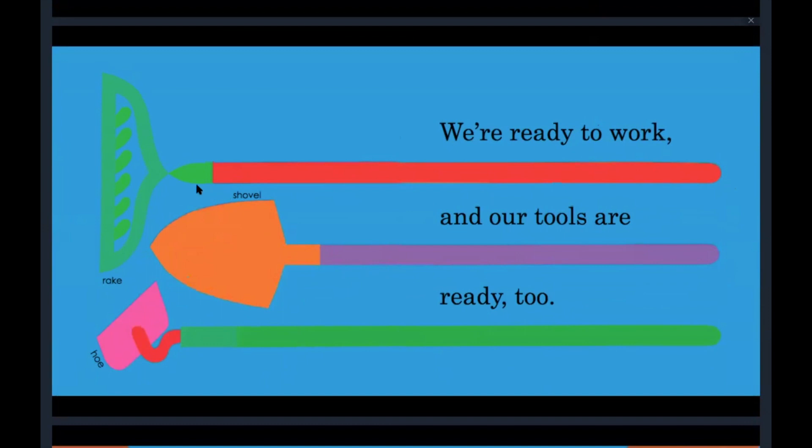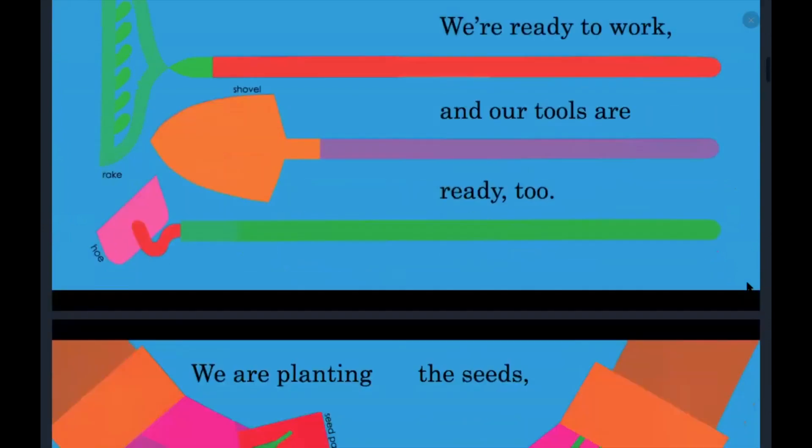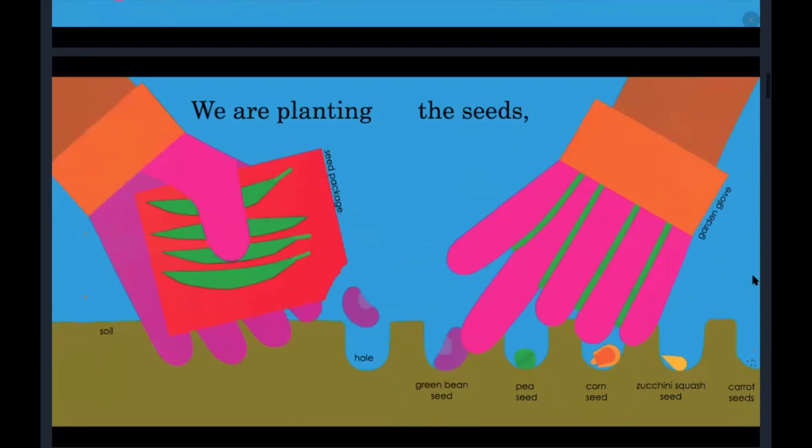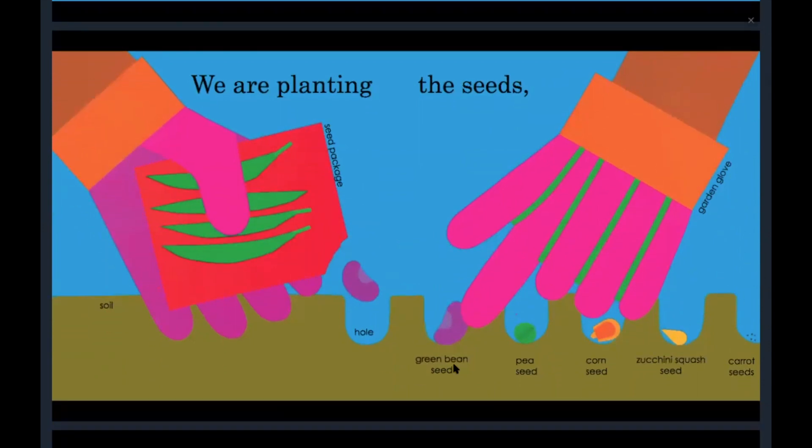This is a big rake, a shovel, and a hoe. We are planting the seeds. These are our seed packets, here's the soil, and here are the little holes.